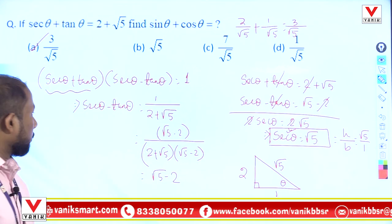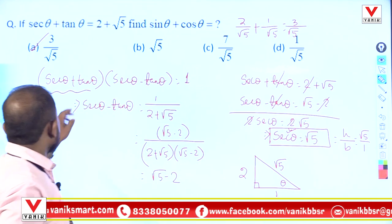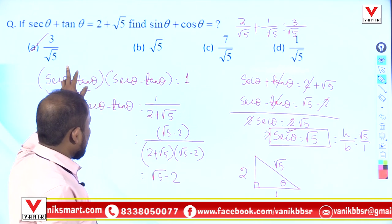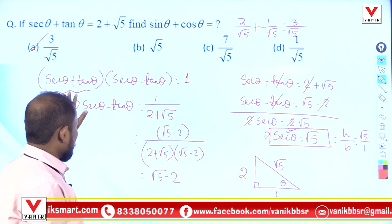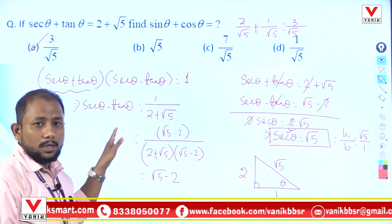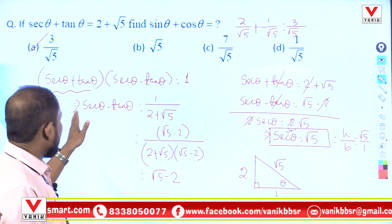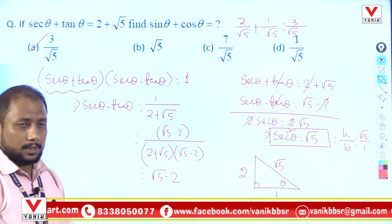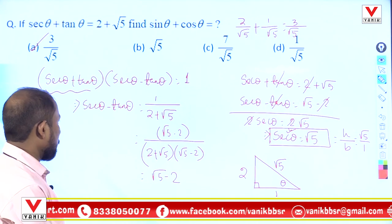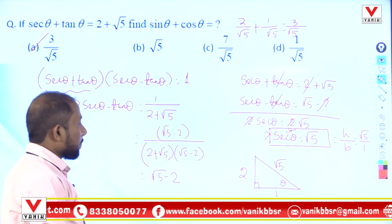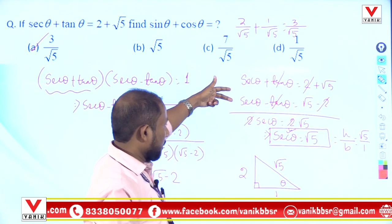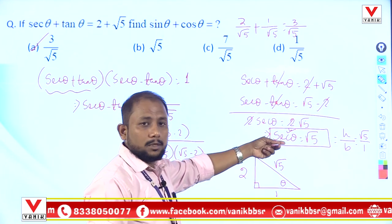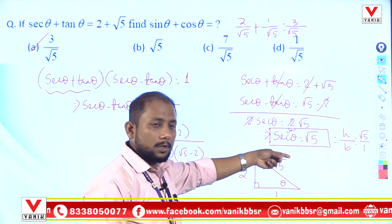The key point is simple: if you are given a trigonometric identity, apply the property sec²θ - tan²θ = 1 or cos²θ + sin²θ = 1 as needed, then solve the equation and use a triangle to find the required trigonometric ratio.